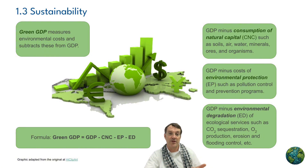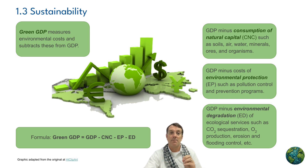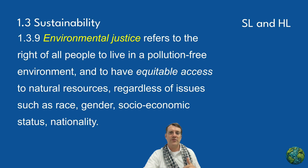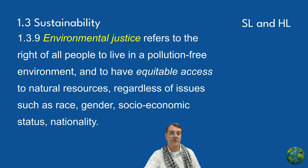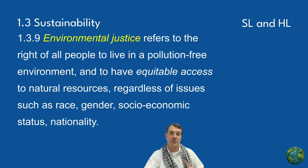The formula for Green GDP is: GDP minus consumption of natural capital, minus the cost of environmental protection, minus the cost of environmental degradation. Green GDP attempts to account for all environmental factors ignored by traditional GDP. Environmental justice is defined as the right of all people to live in a pollution-free environment and have equitable access to resources regardless of race, gender, socioeconomic status, or nationality. Note: equitable means people get what they need, not that everyone gets the same amount.